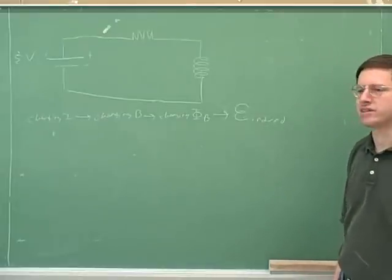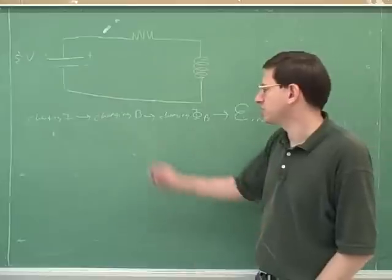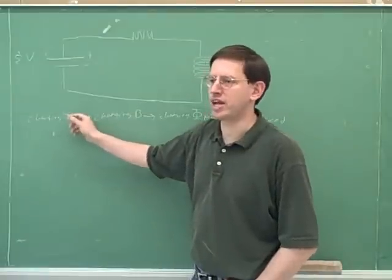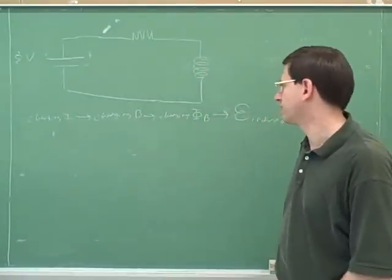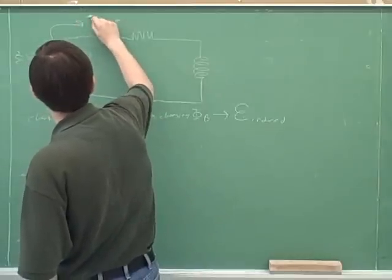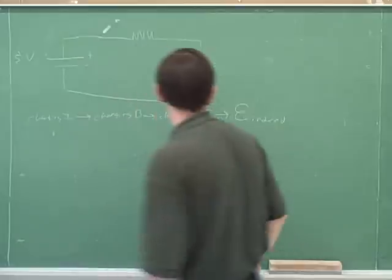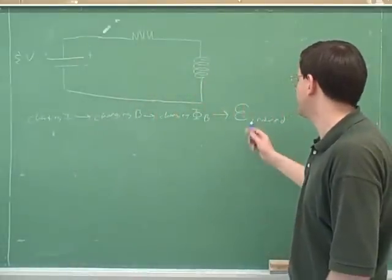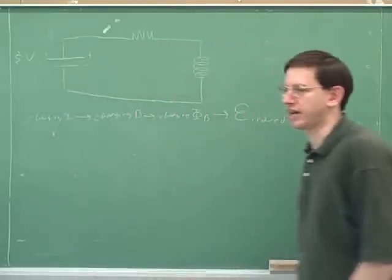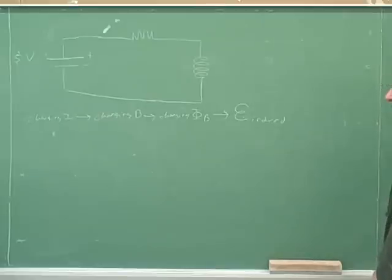Lenz's law says that the induced voltage opposes the change that was causing it — this induced voltage is trying to oppose the change in current. The key idea is that this acts to oppose the change: Lenz's law says that induction acts to oppose the change. The upshot of this is that an inductor prevents a jump in current.